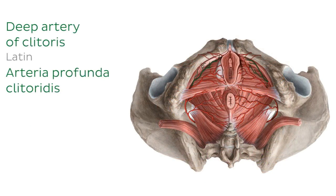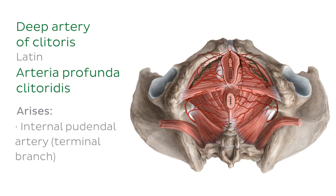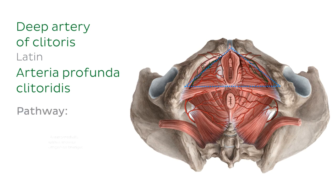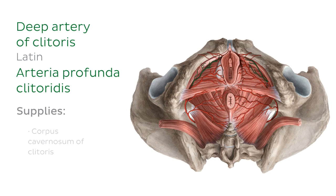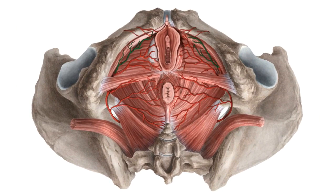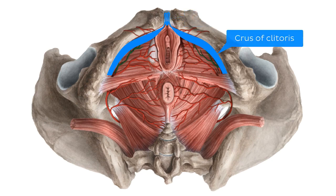The final branch is the deep artery of the clitoris, considered one of two terminal branches of the internal pudendal artery. It runs anteromedially within the anterior urogenital triangle to supply the corpus cavernosum of the clitoris, which makes up one half of the crura or hood of the clitoris. In this zoomed image you can see the glans clitoris highlighted in blue and the corpus cavernosum forming the hood of the clitoris before running deep to the ischiocavernosus muscle, where they become the crura or the legs of the clitoris.